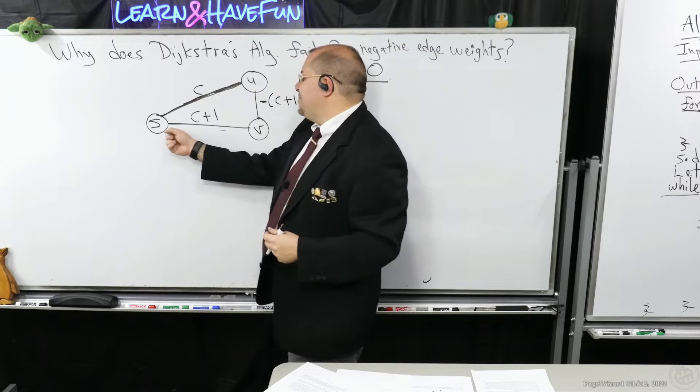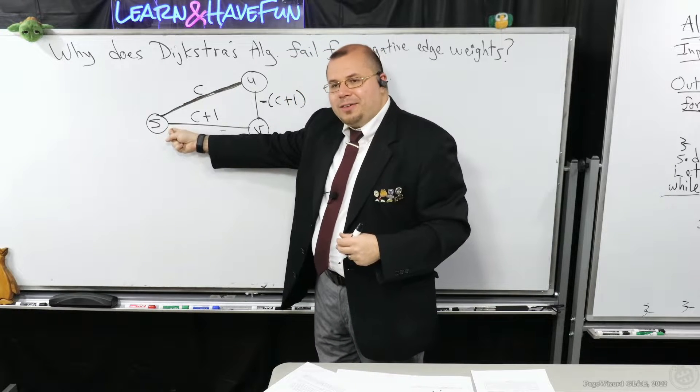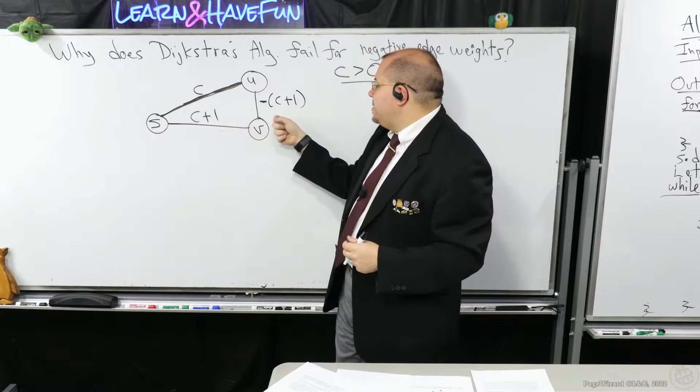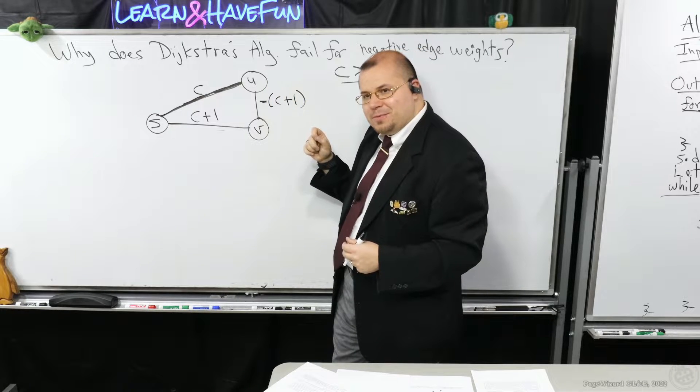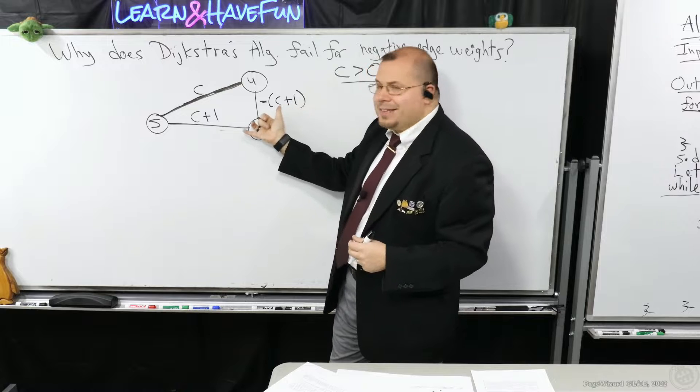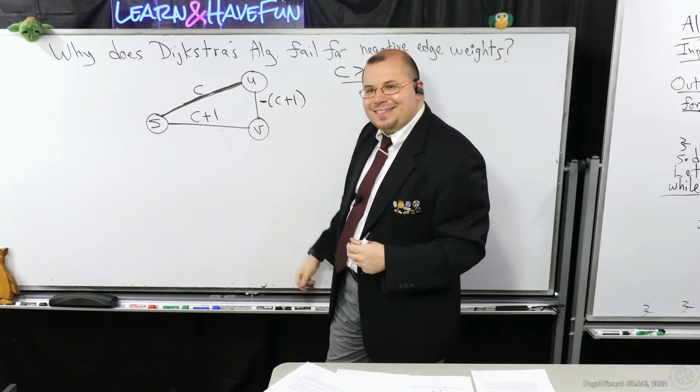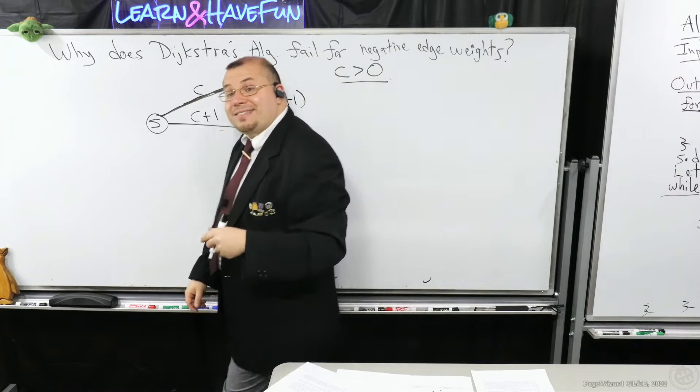Well, look at it. Let's see. We have this other path here, C plus 1 plus minus C plus 1, or negative C plus 1. What's this? That's 0, right? That's strictly less than C.